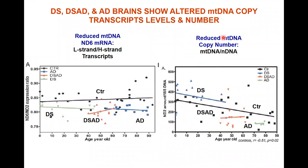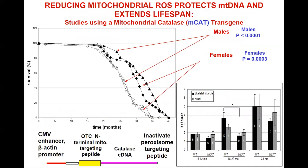We can also look at mtDNA copy number. As we age, mitochondrial DNA copy number in the brain declines. With Down syndrome, there is initially a high copy number to compensate for the energetic defect, but when dementia develops it drops below normal — and all Alzheimer's patients are below the normal line. We made a mouse with a catalase enzyme targeted to the mitochondria to eliminate hydrogen peroxide making hydroxyl radicals. That mouse lived 20% longer and had 50% less mitochondrial DNA damage — supporting development of drugs to decrease mitochondrial oxidative stress and mitigate age-related diseases.